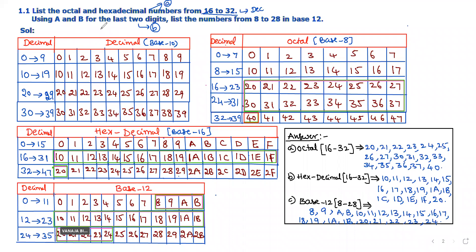In this video I will explain the solution for the given question: list the octal and hexadecimal numbers from 16 to 32. Using A and B for the last two digits, list the numbers from 8 to 28 in base-12. The first part is to list the octal and hexadecimal numbers from 16 to 32, where the given numbers are decimal. The second part is to list the numbers from 8 to 28 in base-12 number system.